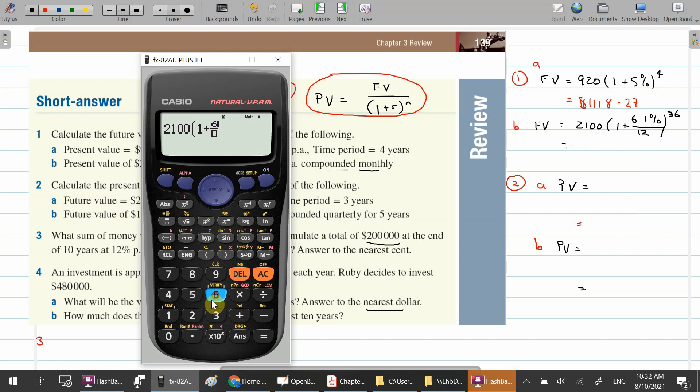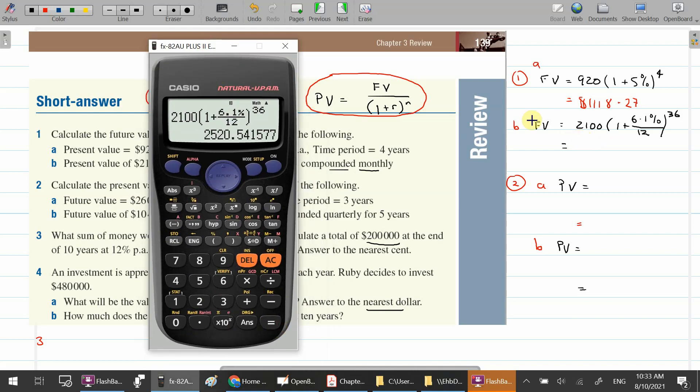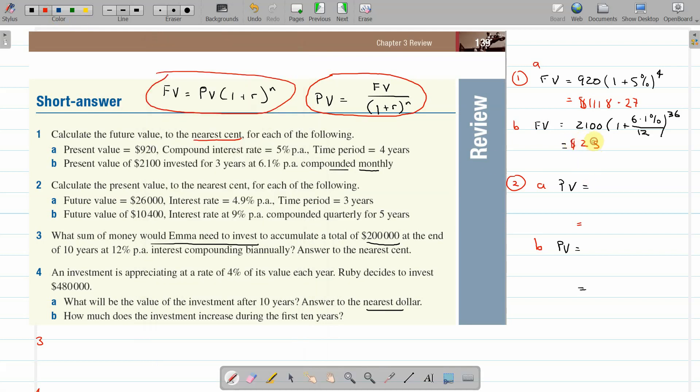So the adjustments when it's compounded are different to the yearly. You're able to adjust it twice: once to divide it so you get the right rate, and then the number of years is multiplied by 12. On the calculator: 2100 times 1 plus, then we do our fraction, 6.1% over 12, bracket, to the power of 36. That will give us a value of $2,520.54 after three years.